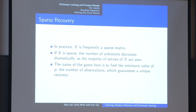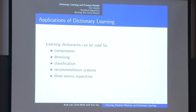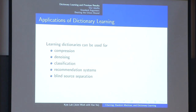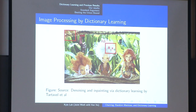Now is the time to motivate the problem and talk about some of the applications. Learning dictionaries are often used in compression, denoising, classification, recommendation systems, and blind source separation. I'm not going to have time for a deep discussion of these — it would take us too far afield, and it risks showing how little I know about these problems. So let me discuss just a few visually compelling examples.